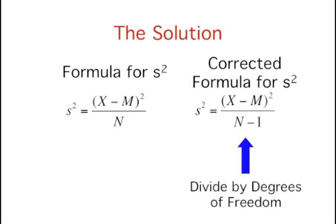But there is a solution. To estimate the population variance from a sample, we use a similar formula, but the denominator is different. We use n-1 instead of n. By using the formula with n-1 in the denominator, we get an unbiased estimate of the population variance. n-1 is the degrees of freedom.